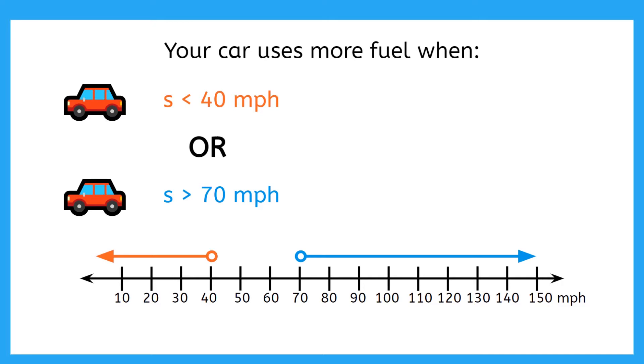So at what speeds is your car more fuel efficient? That's right! In between 40 and 70 miles per hour. So this range is actually representing all the speeds that are not a solution to our compound inequality. And this makes sense. Since this is an OR compound inequality, only one of these inequalities has to be true. We either need to be going slower than 40 miles per hour or faster than 70 miles per hour to be using more fuel.